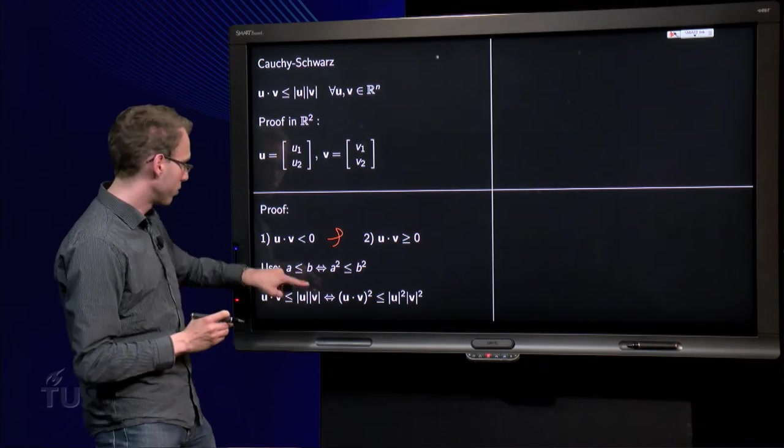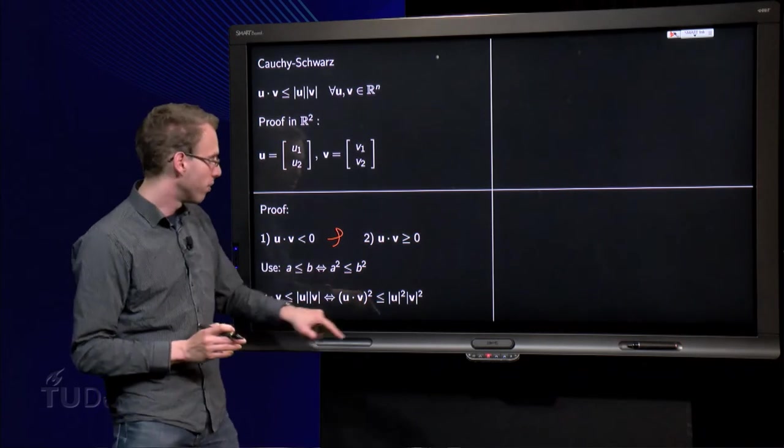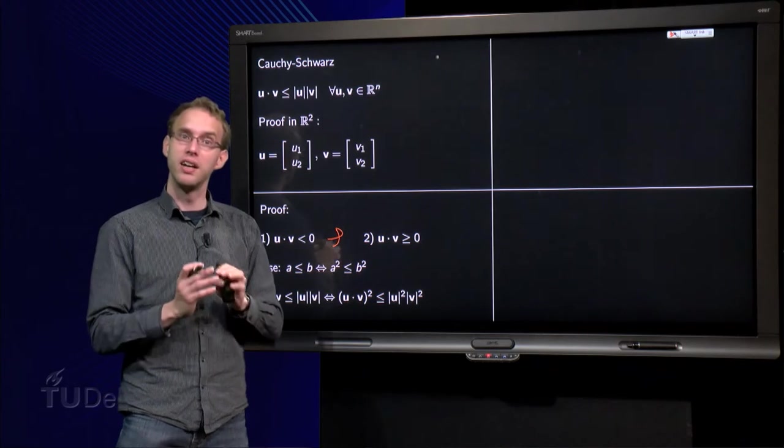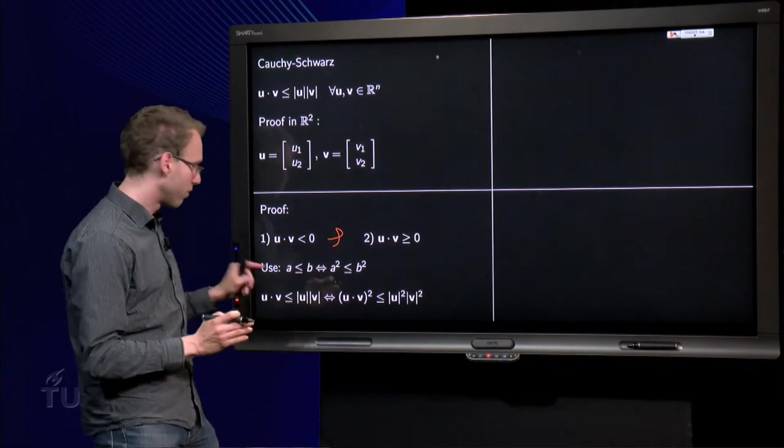So, instead we will not prove this one, but we will prove this one over here. Which tells us then that that one is also satisfied.